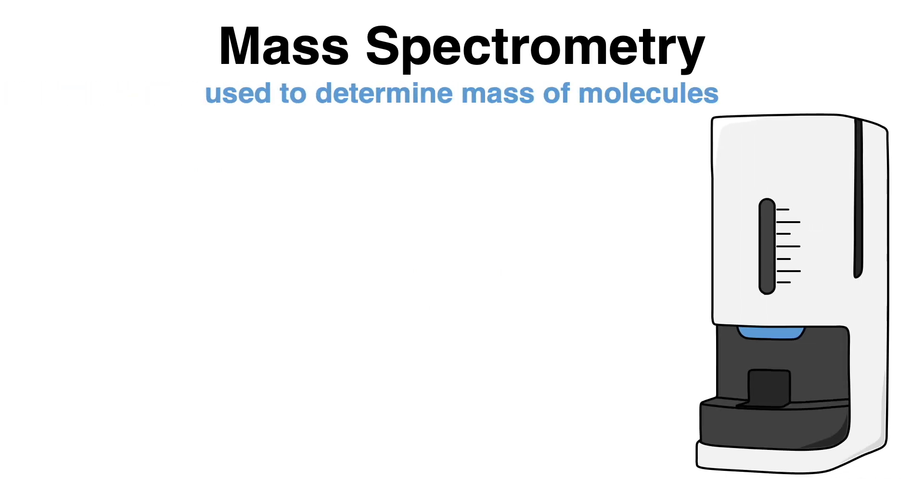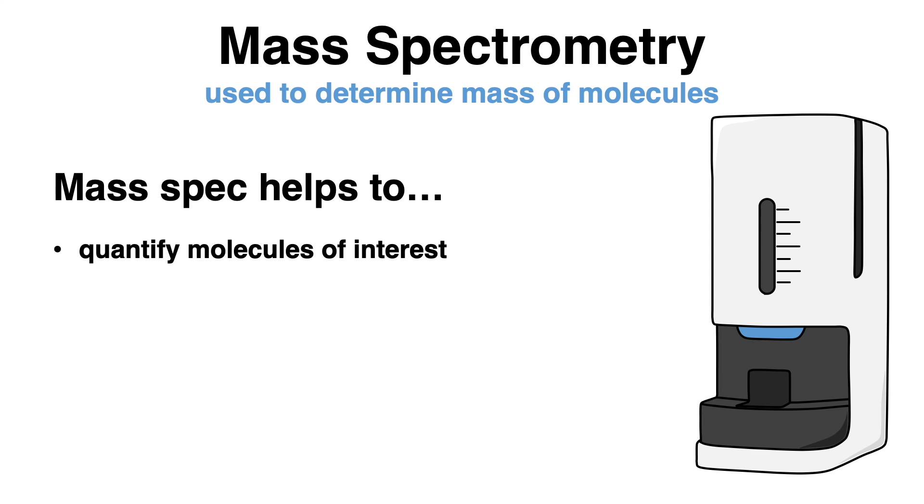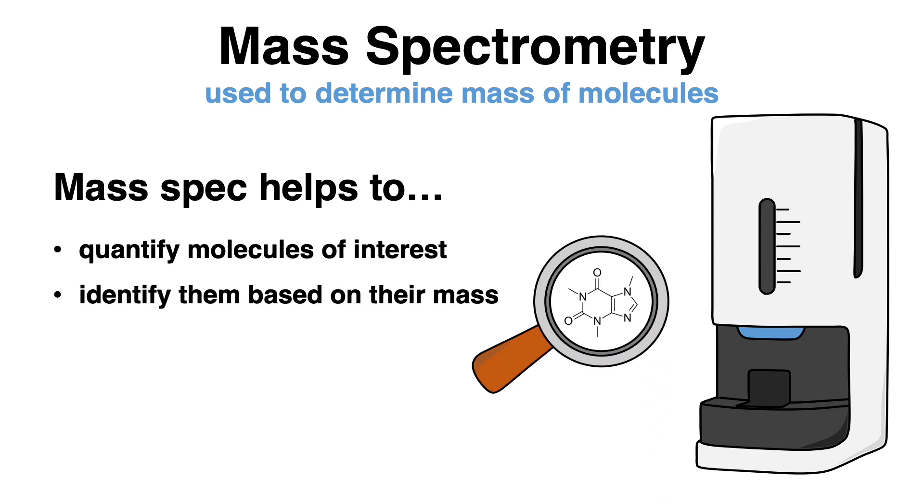Scientists apply mass spectrometry if they opt to measure the mass of different molecules within a sample. Mass spec helps to quantify molecules of interest and identify them based on their mass. Quite often, the technique is used for protein analysis, which makes mass spec an important tool in the field of proteomics.